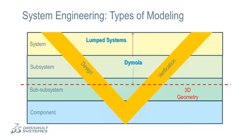Once detailed 3D representations become important in predicting the behavior of subsystems and components, other types of modeling software are required. These tools are used to model spatially distributed behavior. Abaqus, from Dassault Systems, is an example of the kind of tool that would be used at this level to predict stresses, strains, temperatures, and so on. These predictions are based on detailed 3D geometry.